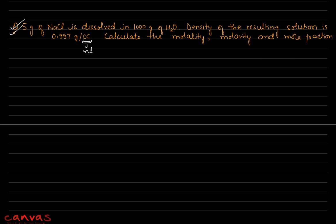The main strategy for this question: compare the given data with what you need to find. Establish a relation between the unknown quantity and what is given. If we want molality, we need moles of solute per kilogram of solvent. If we want molarity, we need moles per volume of solution.